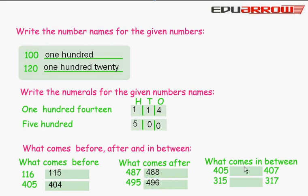What comes in between? 405 and 407 - We write here 406. 315 and 317 - We write here 316.